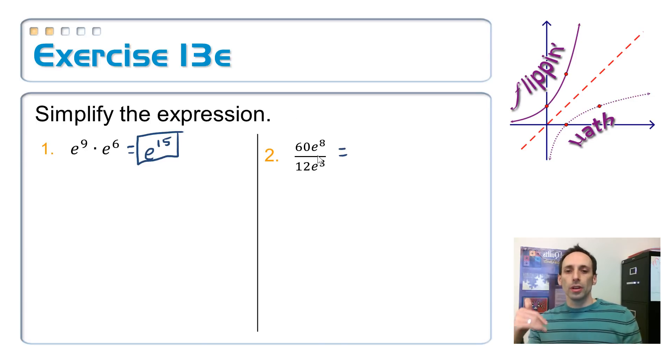Over here on number two, we're going to divide. So first divide the numbers. So 60 divided by 12, that's a five. And whenever you have like bases, you subtract the exponents, so E to the fifth power. So that's a piece of cake.